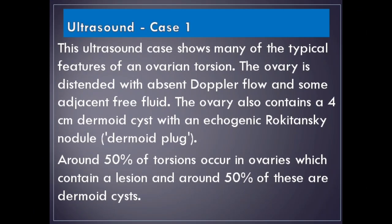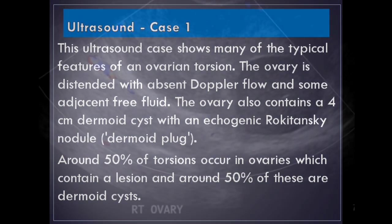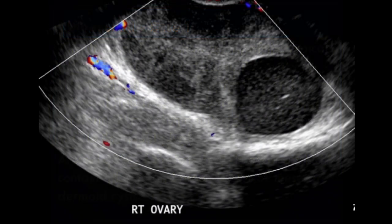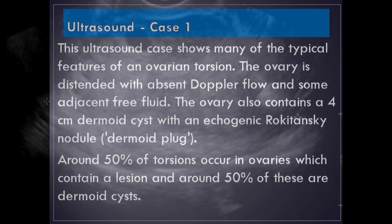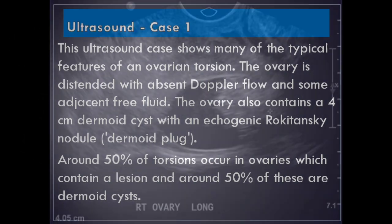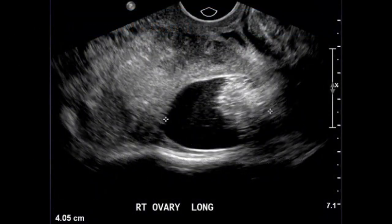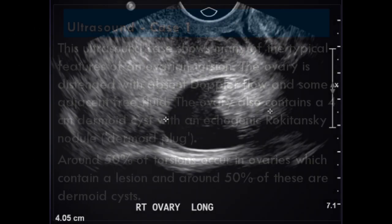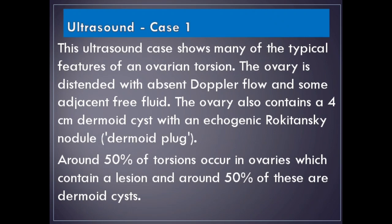Case 1: A 25-year-old female presented with severe lower abdominal pain. This ultrasound case shows many typical features of ovarian torsion. The ovary is distended with absent Doppler flow and adjacent free fluid. The ovary also contains a 4 cm dermoid cyst with an echogenic Rokitansky nodule (dermoid plug). Around 50% of torsions occur in ovaries containing a lesion, and around 50% of these are dermoid cysts.